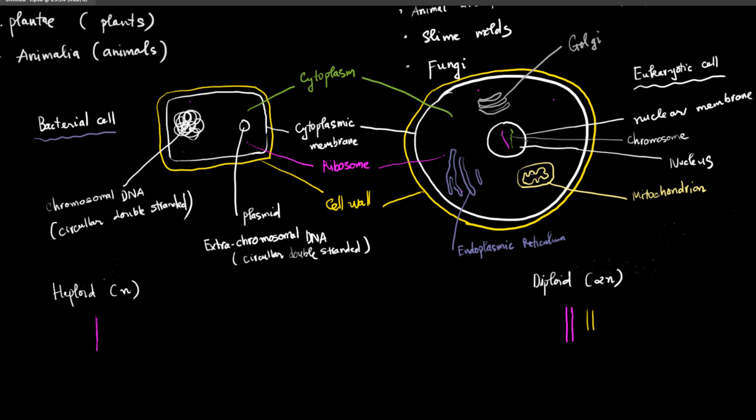Besides that, eukaryotic cells also have many cell organelles which are absent from bacterial cells. The cell organelles found in eukaryotic cells are mitochondria, endoplasmic reticulum, Golgi apparatus, and some photosynthetic microorganisms also include chloroplasts.